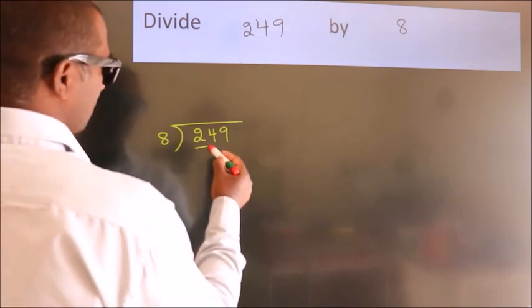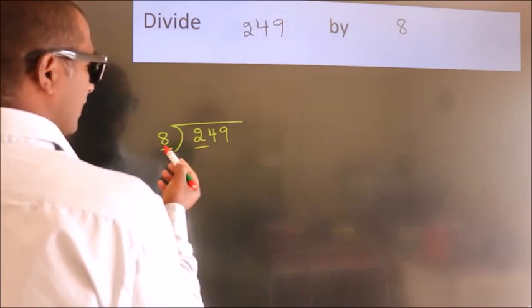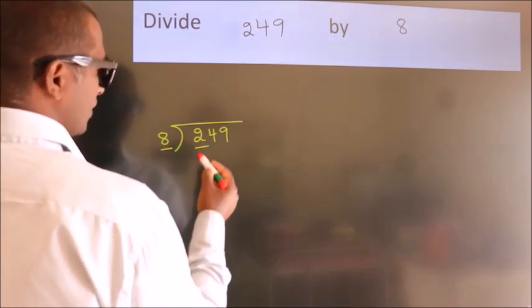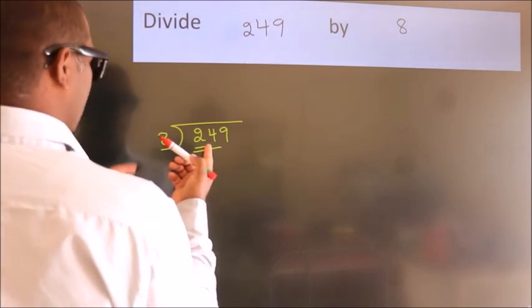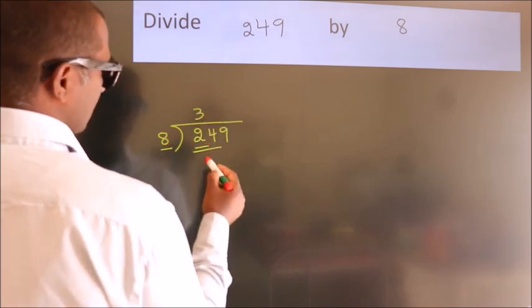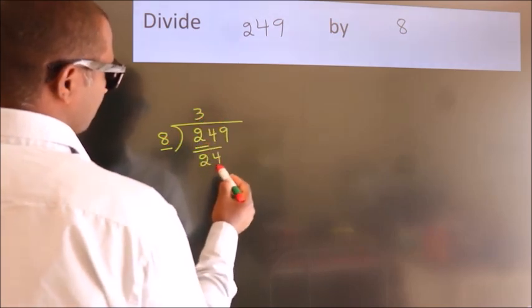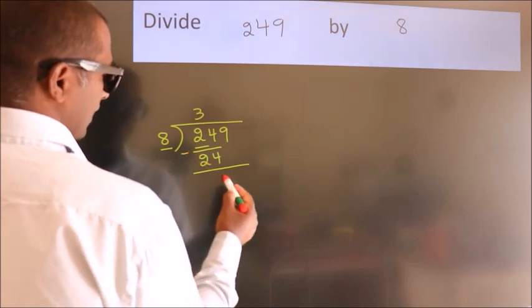Next, here we have 2. Here 8. 2 smaller than 8. So we should take 2 numbers. 24. When do we get 24? In 8 table. 8 threes, 24. Now we should subtract. We get 0.